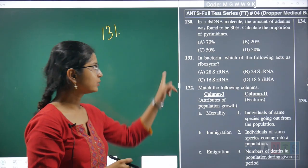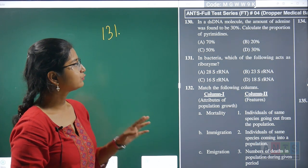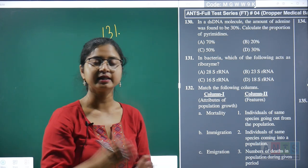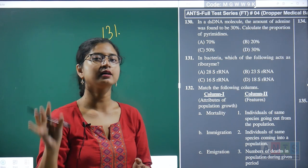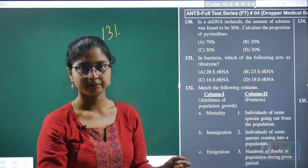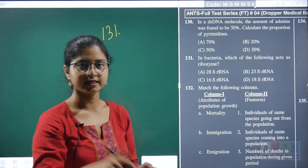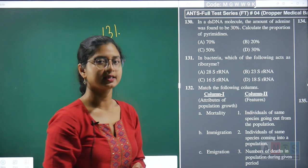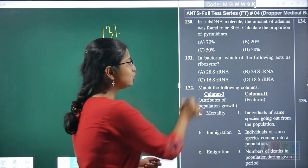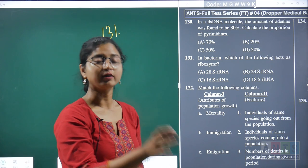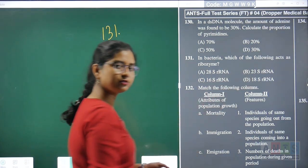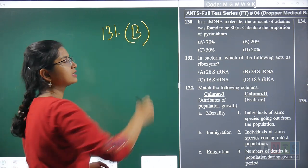Question 131: in bacteria, which of the following acts as a ribozyme? During translation, peptide bond formation requires enzymatic activity from specific rRNA molecules behaving as enzymes — these are ribozymes. The 23S rRNA is the prokaryotic ribozyme (28S rRNA is eukaryotic). Since the question asks about bacteria, the answer is 23S rRNA. Hence, question 131's correct answer is option B.